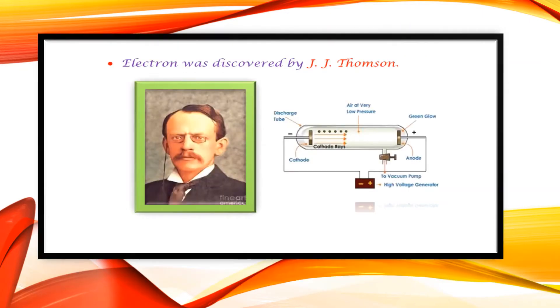Sir Joseph John Thomson was a British physicist who discovered the first subatomic particle, the electron, by cathode ray tube experiment, in which cathode rays move from cathode to anode.